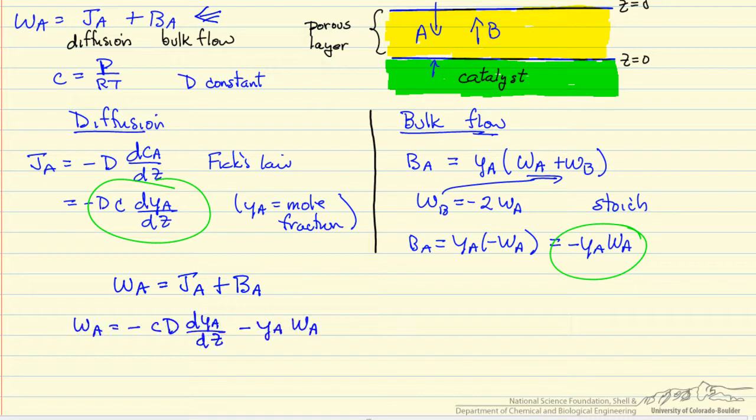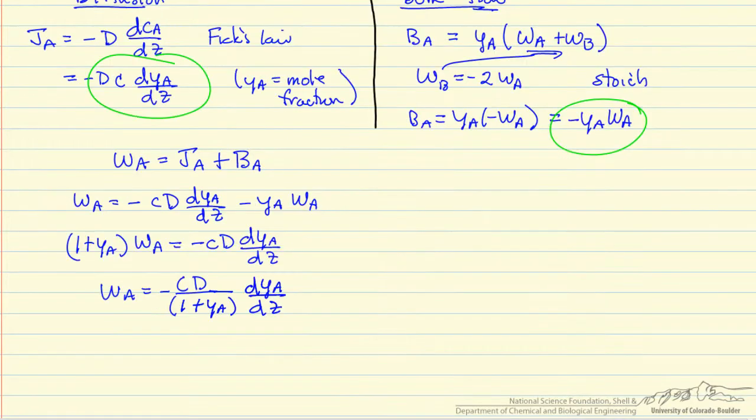So we know with this equation, and now all we're going to do is rearrange. So now we have the flux of A in terms of mole fraction of A, total concentration, diffusivity, and distance.